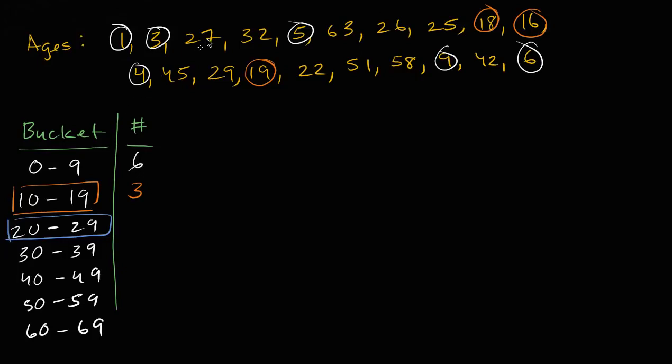And I think you see where this is going. What about 20 to 29? So it's one, two, three, four, five people. Five people fall into that bucket. What about 30 to 39? We have one, and that's it. Only one person in that 30 to 39 bin or bucket or category.